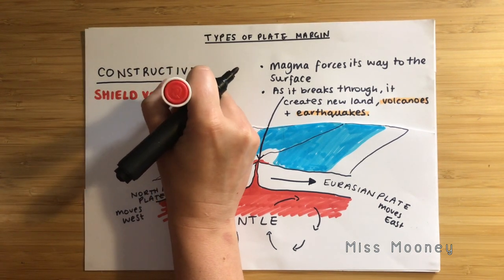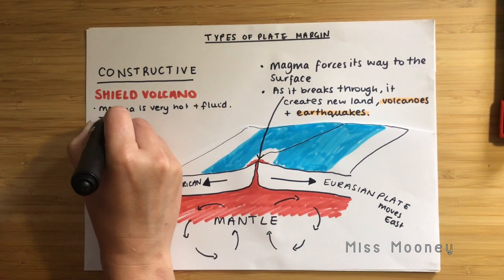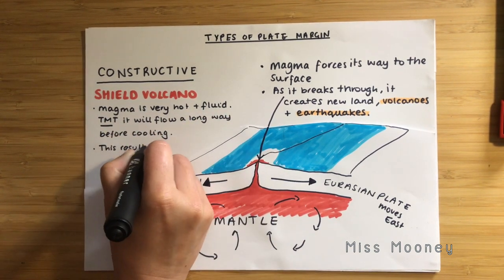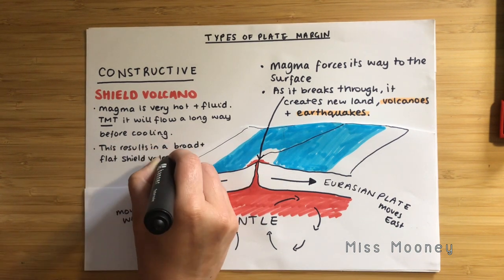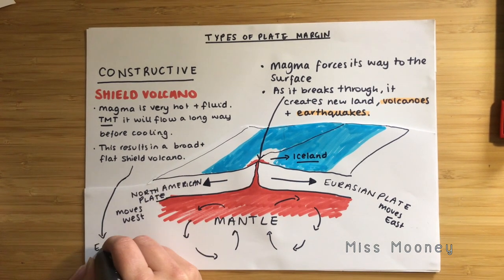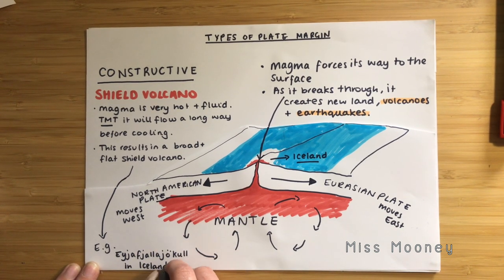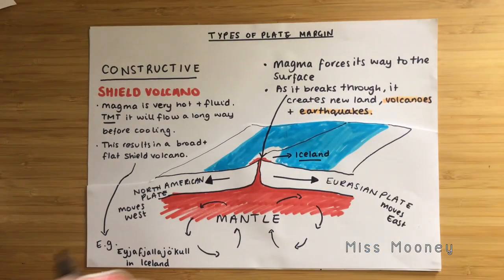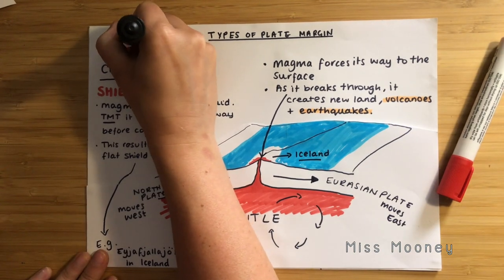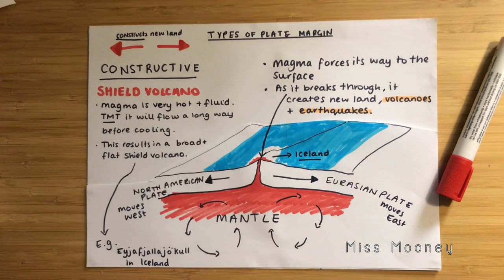At this margin we get shield volcanoes. The magma at a constructive plate margin is very hot and very fluid, which means it flows a very long way out of the crust before cooling down, resulting in very low and flat volcanoes. A good example is the Mid-Atlantic Ridge, where the Eurasian plate moves away from the North American plate at about 4cm per year, and the island of Iceland exists because of this margin. To summarise: constructive plate boundaries are plates moving apart, magma escapes forming new land and shield volcanoes, and we also have earthquakes.